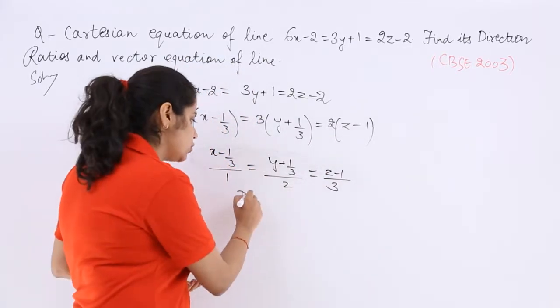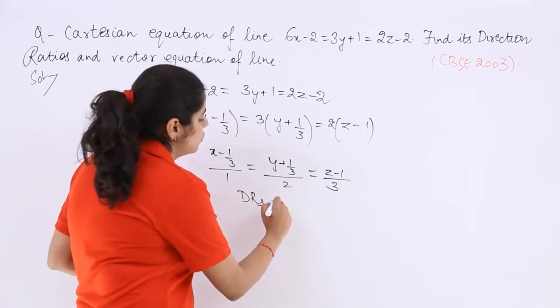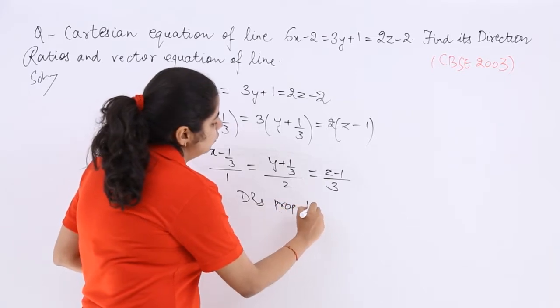So what are the direction ratios? Direction ratios of the line are proportional to 1, 2, and 3. So direction ratios proportional to 1, 2, 3.